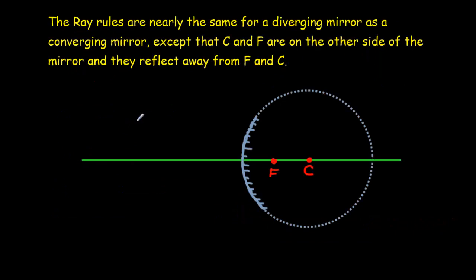The ray rules that we're going to use for diverging mirrors are almost identical. The only difference is now the focal point and the center curvature will be on the opposite side of the mirror. So we'll have our object somewhere over here, light rays coming in.